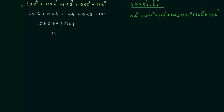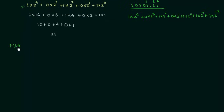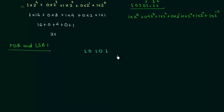Now we will move to MSB and LSB. MSB is an abbreviation for Most Significant Bit, and LSB is an abbreviation for Least Significant Bit. We will understand MSB and LSB with the help of an example. Take the binary number 10101, which we already know is equivalent to 21 in decimal. The leftmost bit is called the MSB and the rightmost bit is called the LSB.